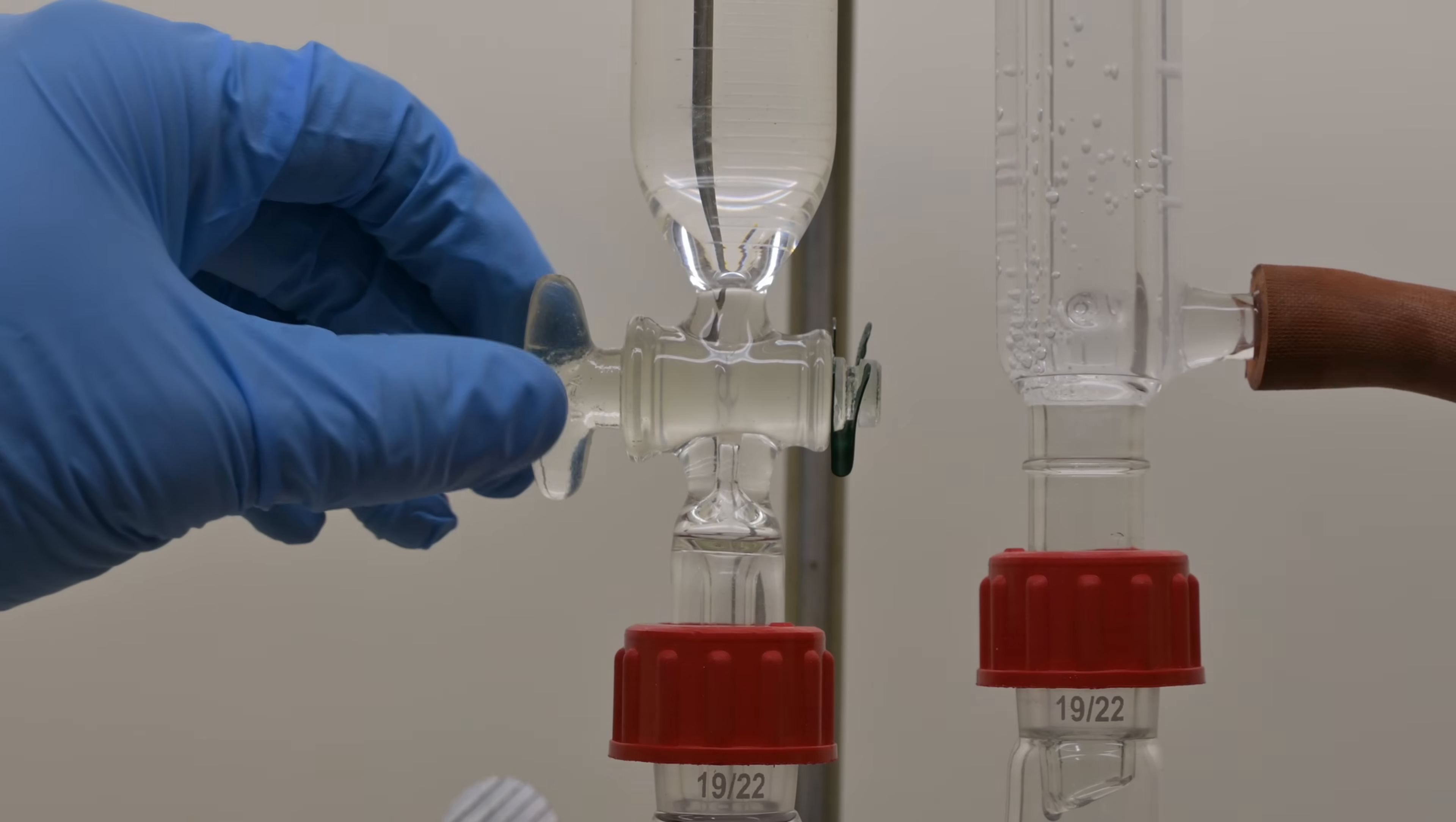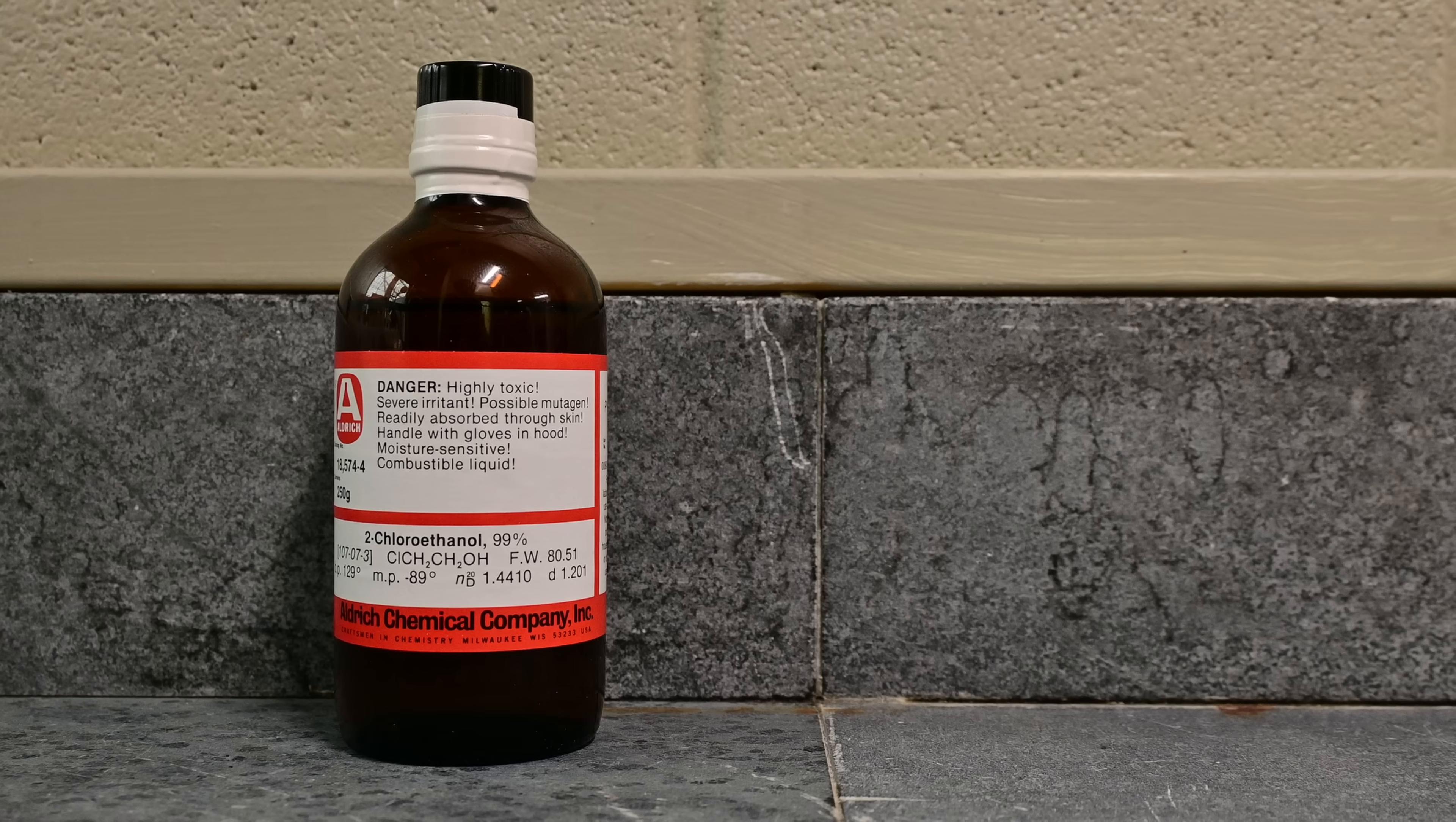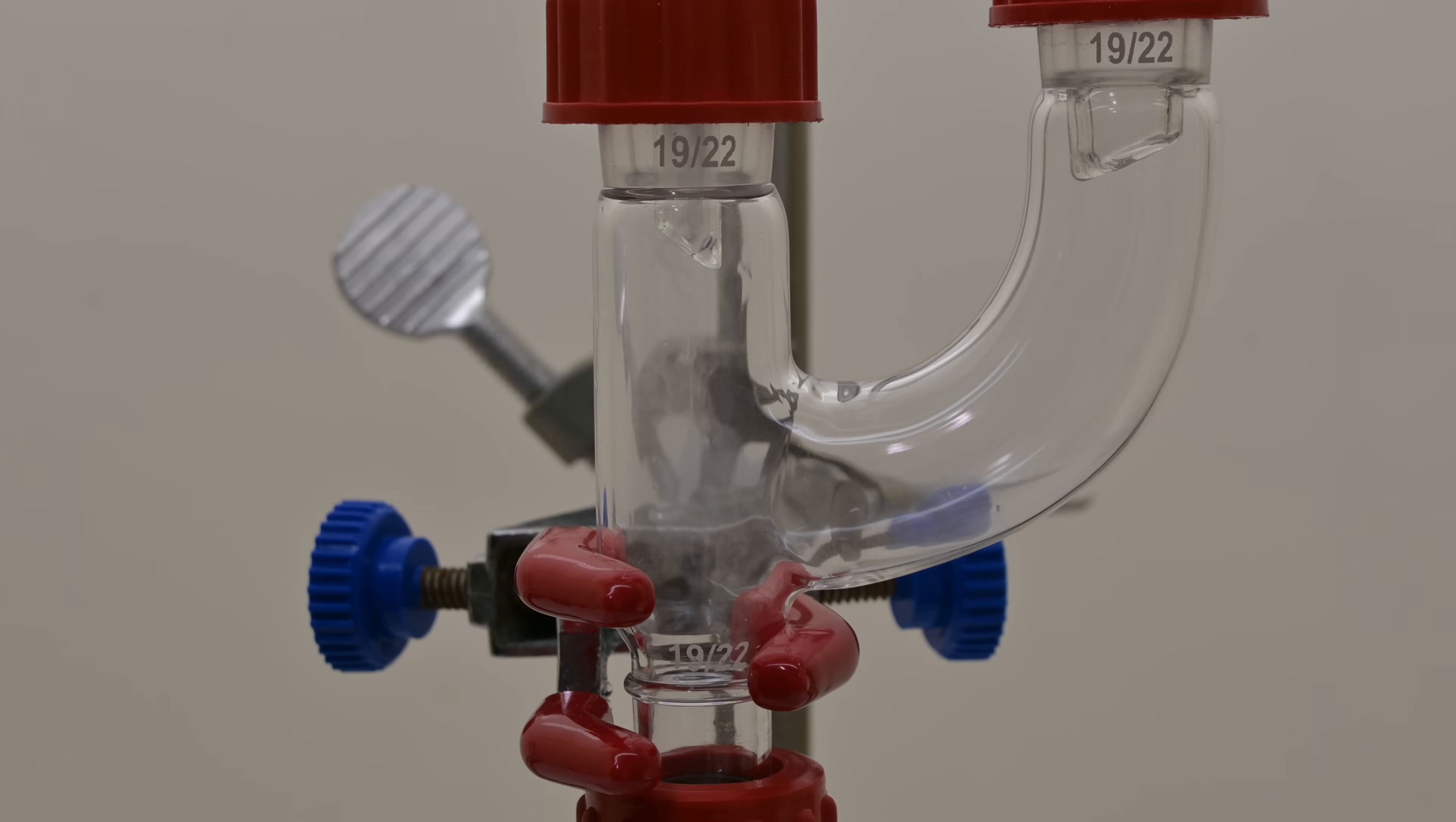2-chloroethanol is then slowly added dropwise through the funnel over the course of about an hour. 2-chloroethanol can also be absorbed through the skin, so I'm being extra cautious with spills and to wear thick gloves. The slow addition controls the rate of reaction and helps prevent a runaway exothermic reaction. What's happening here is a simple nucleophilic substitution. The nitrogen in the diethylamine attacks the carbon bonded to the chlorine, displacing the chlorine ion and forming a new bond with the ethylene group.